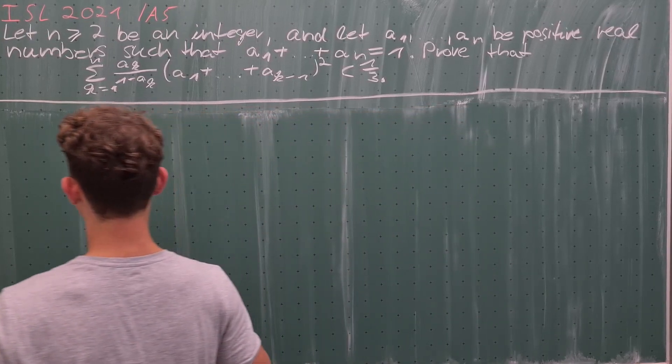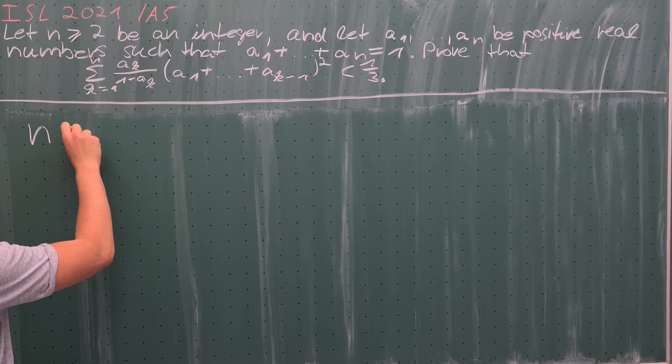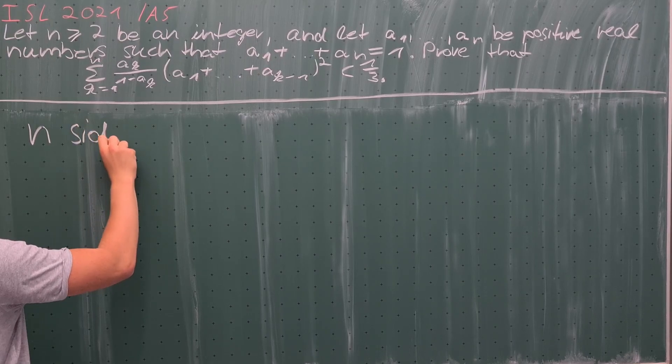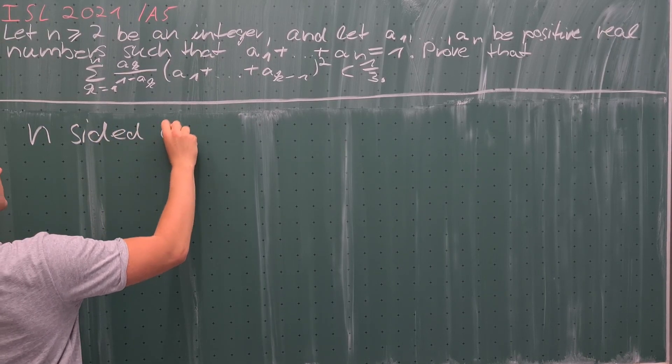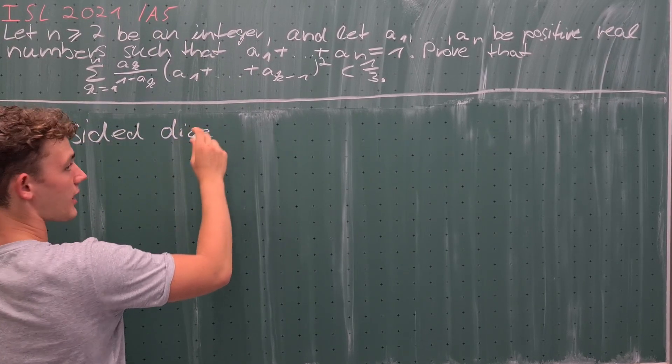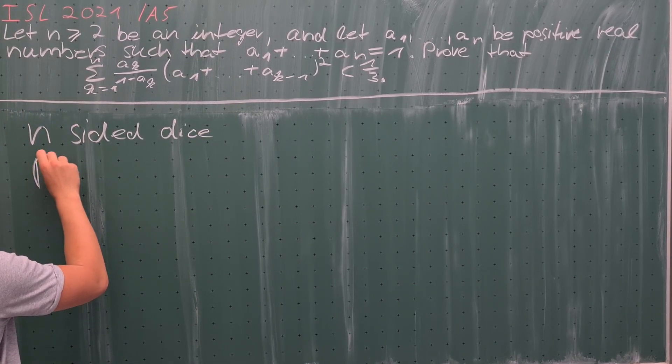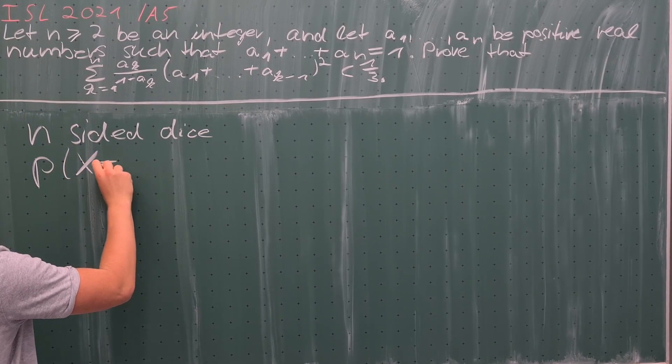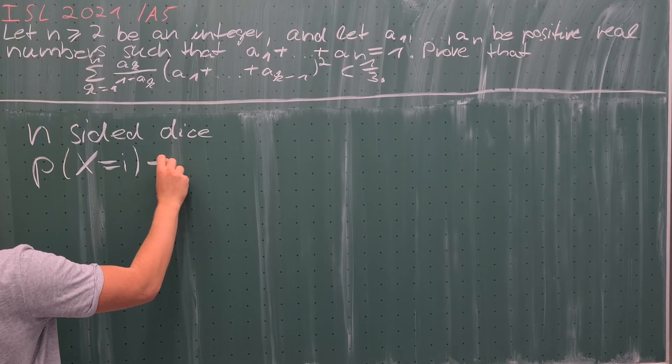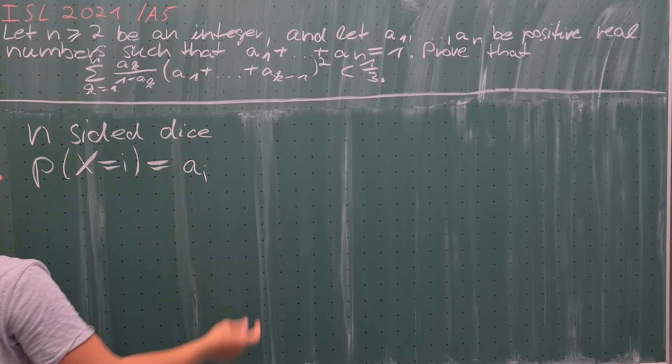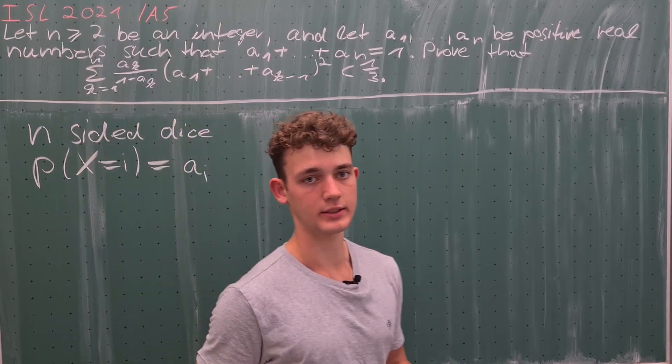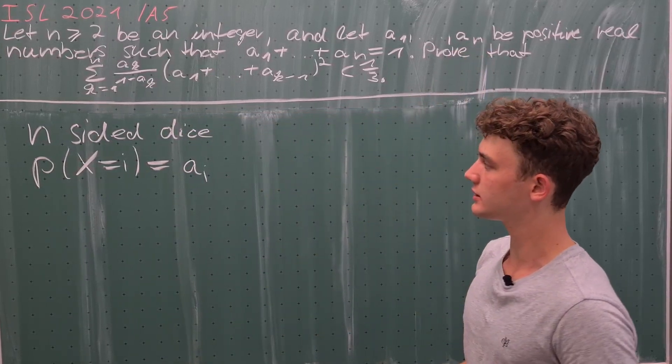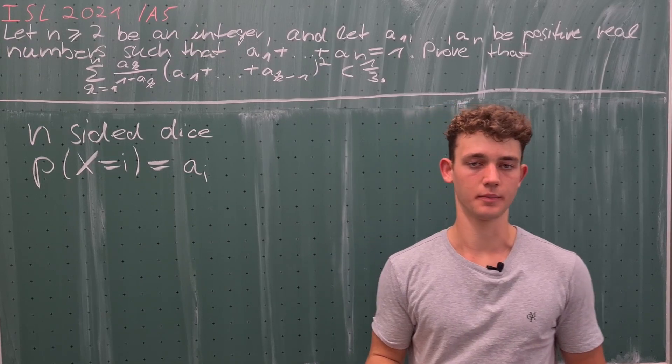So we construct an n-sided dice such that the probability of rolling the number i is equal to a_i. And that works, as I've already said, because they're positive reals and because their sum is equal to 1.